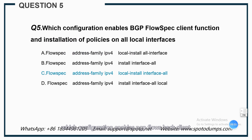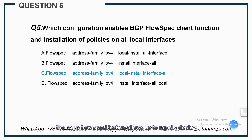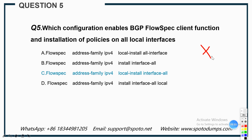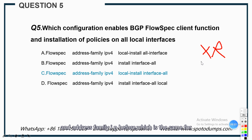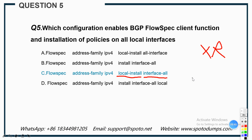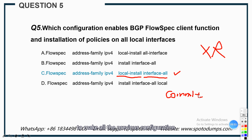Question 5: Which configuration enables BGP flow spec client function and installation of policies on all local interfaces? BGP flow specification allows us to rapidly deploy and propagate filtering. This is a typical configuration on IOS XR software. The correct configuration should include flows back and address family IPv4 — which is the same for all options — and then local-install interface all. So C is the correct answer. Also, don't forget to commit to make all previous configuration work.